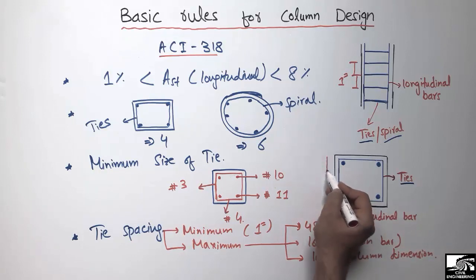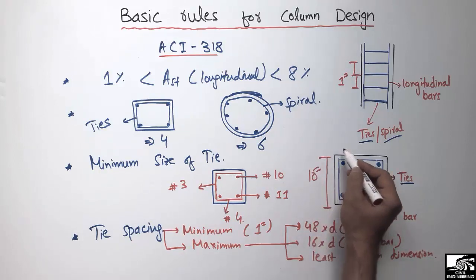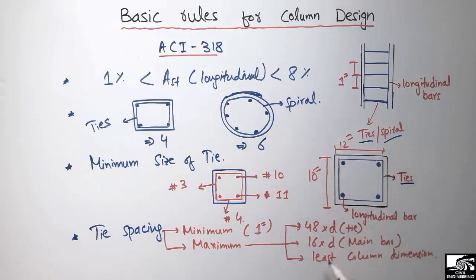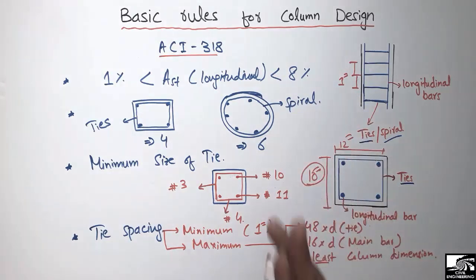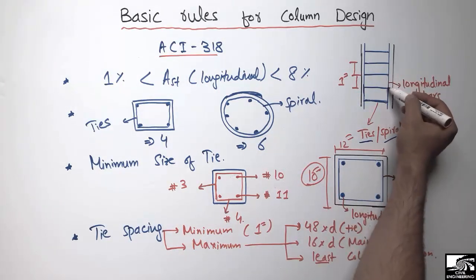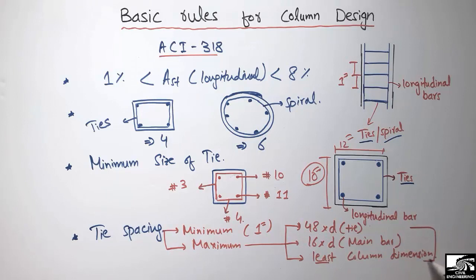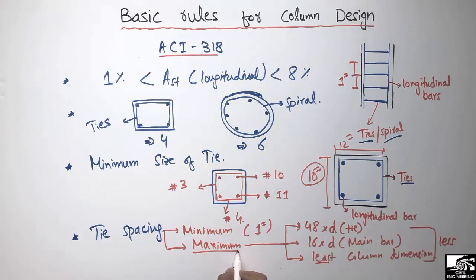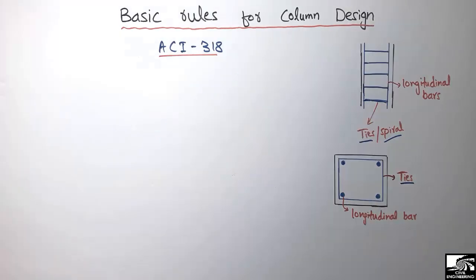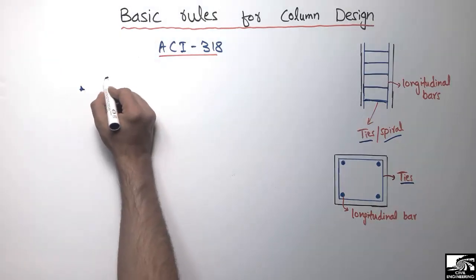For example, if the column dimensions are 10 inches and 12 inches, we take 10 inches because that is the least column dimension. So the maximum spacing between ties is the least value among: 48 × diameter of tie bar, 16 × diameter of main bar, and the least column dimension. This is the spacing requirement for ties in concrete column design.